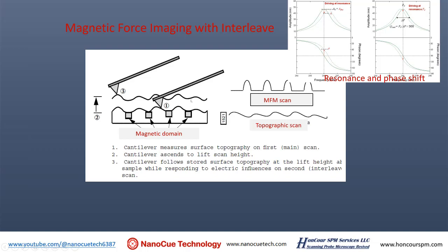The lift distance is typically about 15 nanometers, sometimes 100 nanometers. If the sample is extremely smooth, you could lift a shorter distance. If the sample is very rough, you need to lift a higher distance, because if you lift too short, the tip will collide with the sample and you'll mix the MFM image with your topography image, and the MFM image will no longer look purely like MFM.